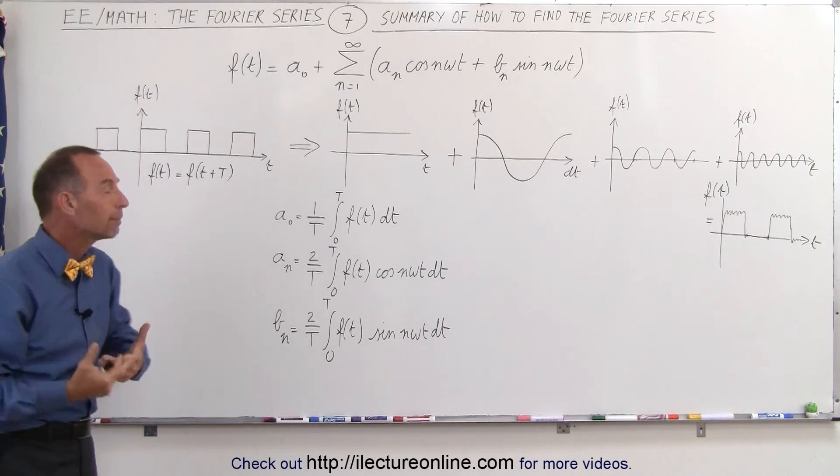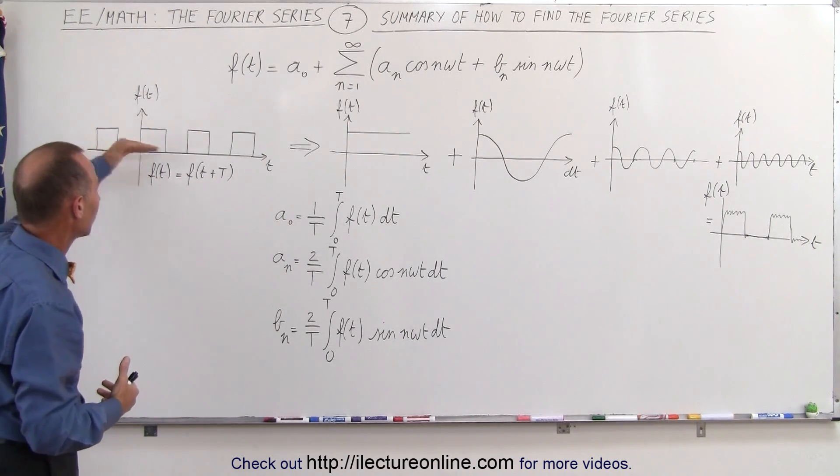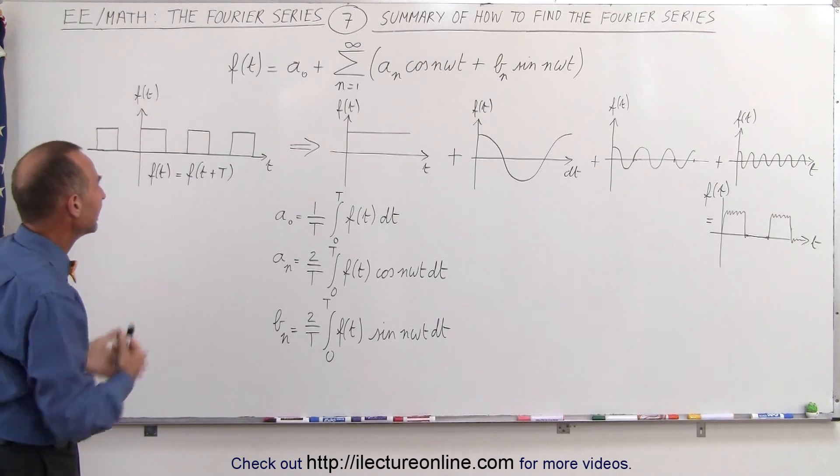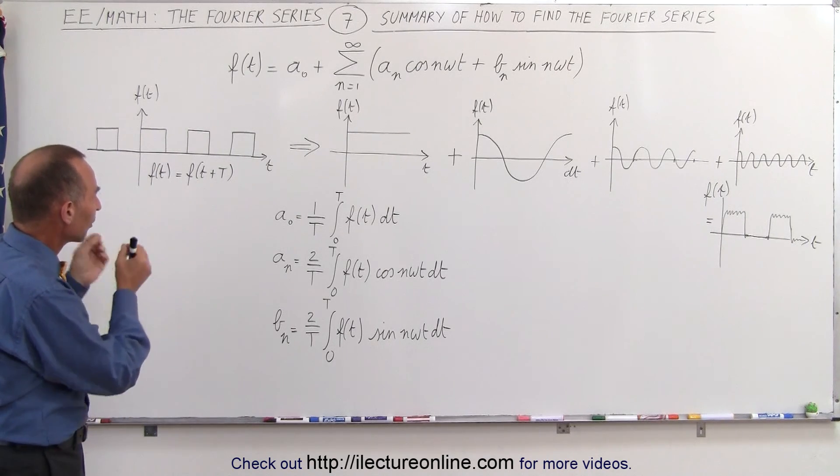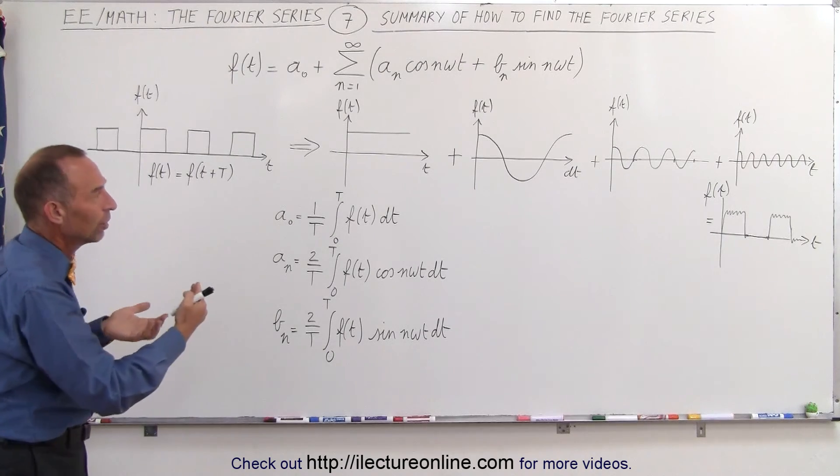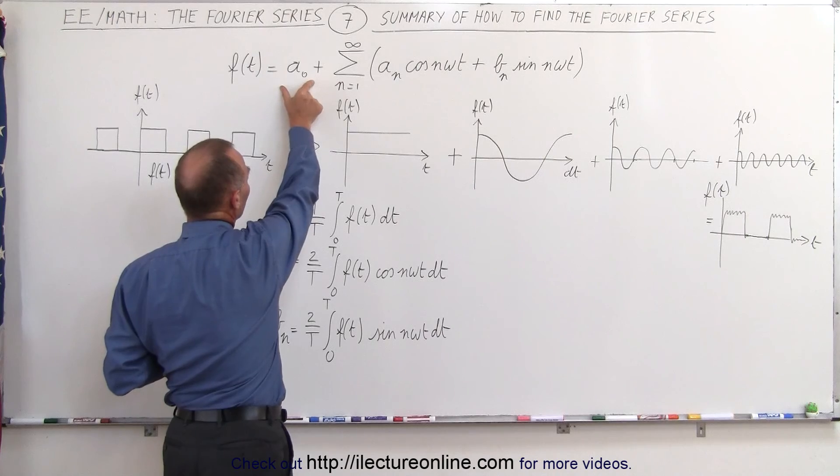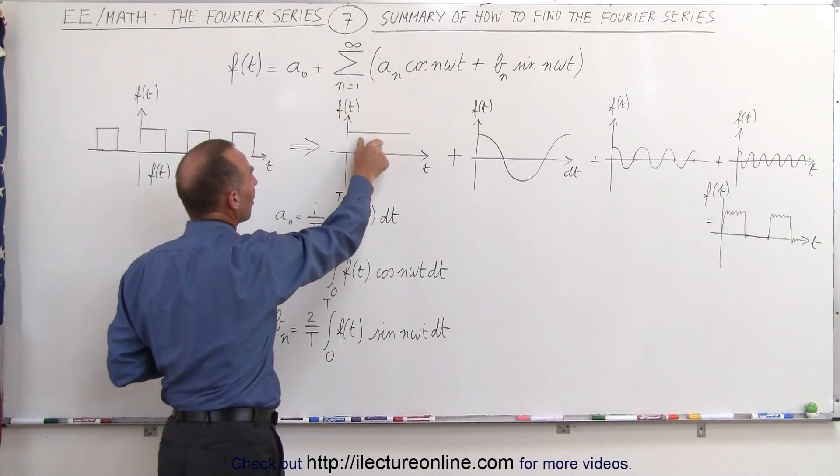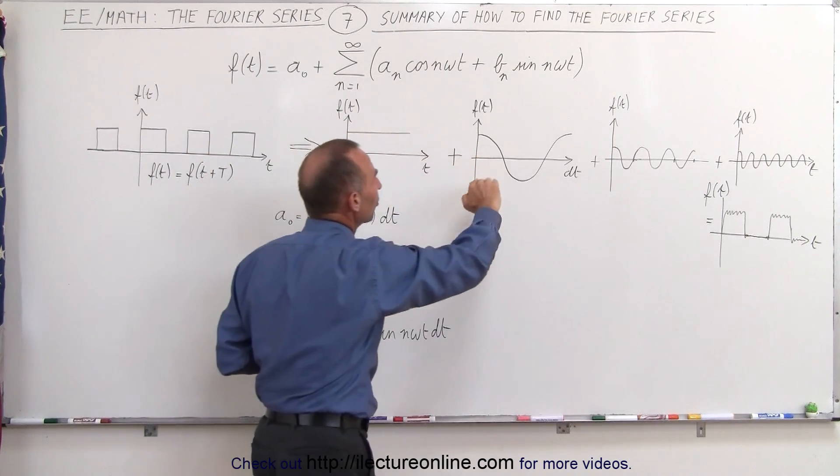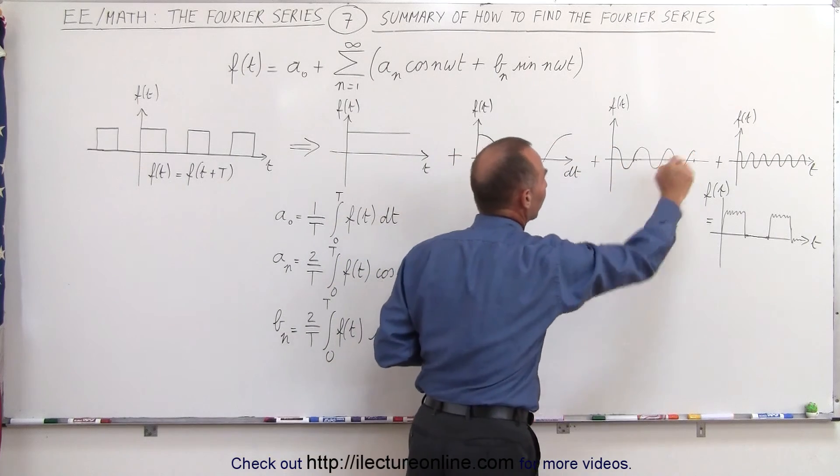That's what we mean by a repeating function like this which has a periodic nature. We want to be able to express that function in terms of a summation of DC portions, which is this right here, this is what we call the DC portion of the function, plus an infinite summation of AC or sinusoidal functions.